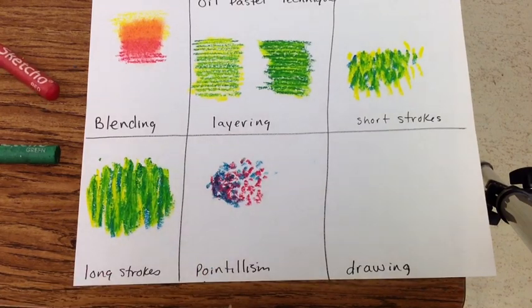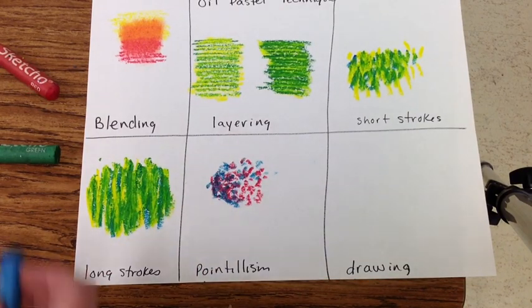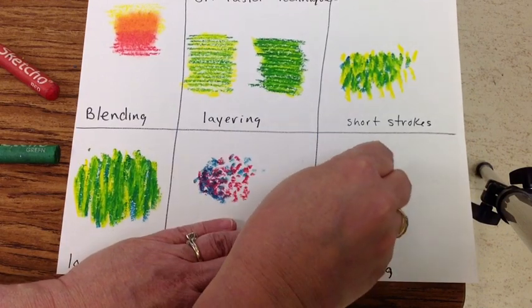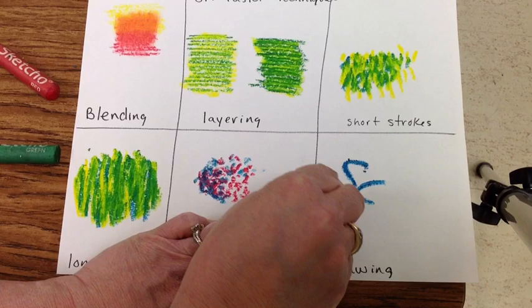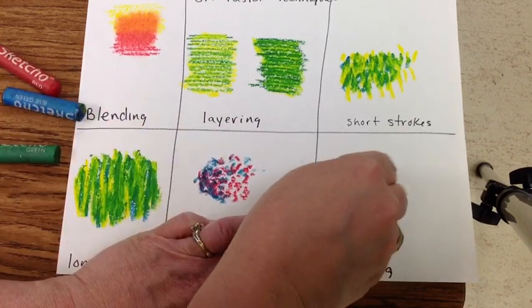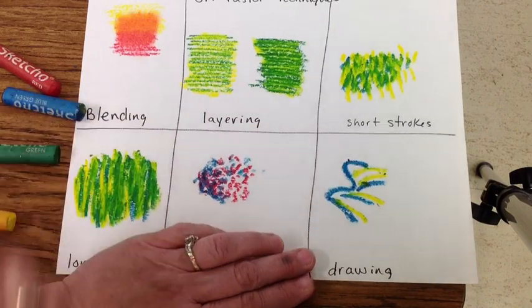Go ahead and try your pointillism. The last technique is just drawing. Using the oil pastel to draw with, drawing lines. You might want to come back over on top after you've blended and sharpen edges using the drawing technique. Get your techniques done.